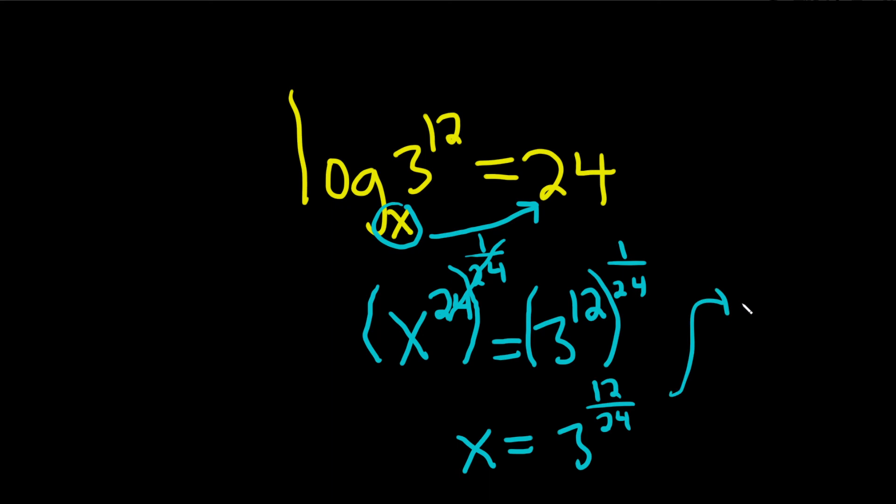Okay, so then we have x equals, well that's just going to be a 1 half. Because 12 over 24 is 1 half. This is 3 to the 1 half.